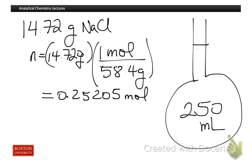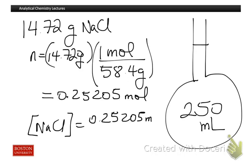And to get the concentration of the sodium chloride solution in moles per liter, I'll divide those number of moles, 0.25205 moles divided by 0.250 liters, and I'll get for myself 1.008 molar.